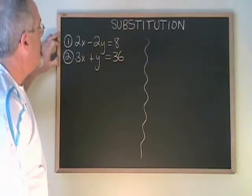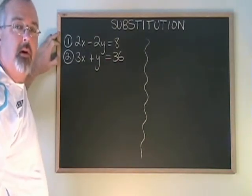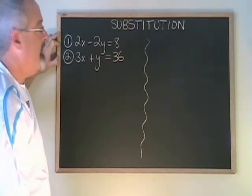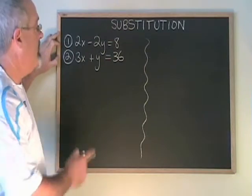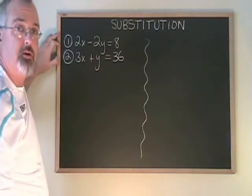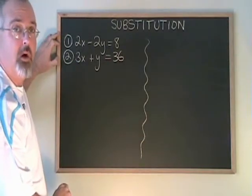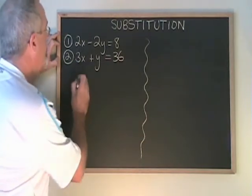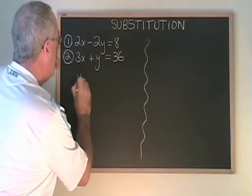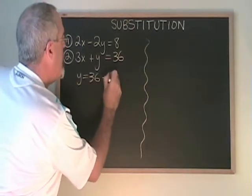In this example, we're given two equations and neither of them already has one of the letters isolated. So we have to do some algebra to isolate one of the letters in one of the equations before we can do the substitution. I'm going to work with equation 2 and isolate the y again. If I move the 3x to the other side of the equals, I get y equals 36 minus 3x.